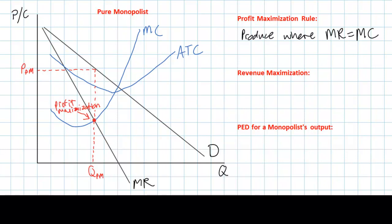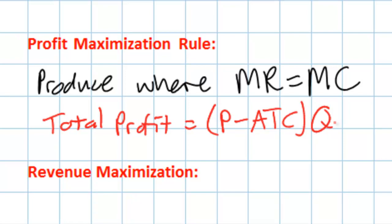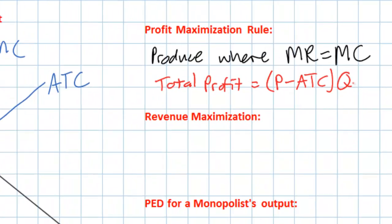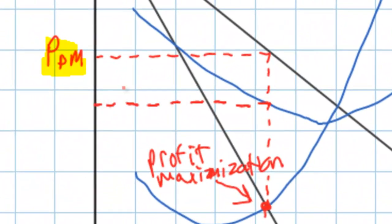To find and calculate economic profits we must know the average total cost, because total profits equal price minus average total cost times the quantity being produced. To find average total cost we go up from the quantity to our ATC curve, draw a dotted line over to the vertical axis, and that gives us the firm's average total cost of producing QPM units. The area of economic profit is simply price minus average total cost times quantity — a rectangle on our graph.